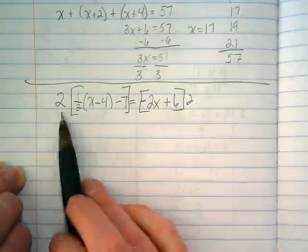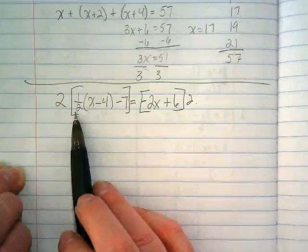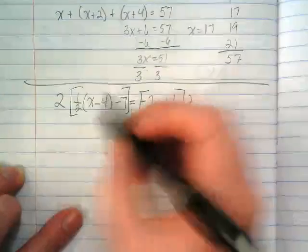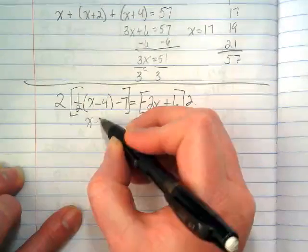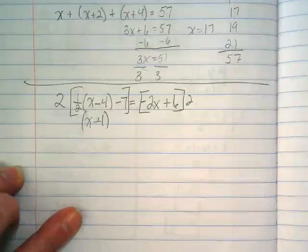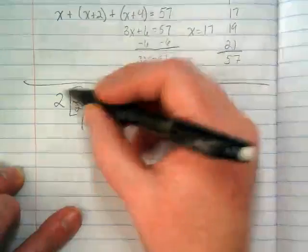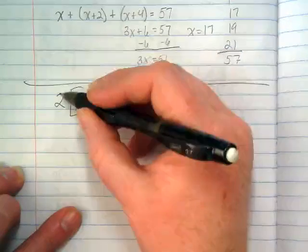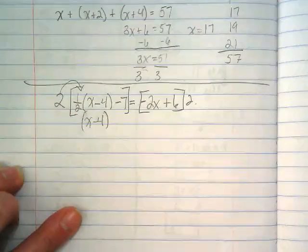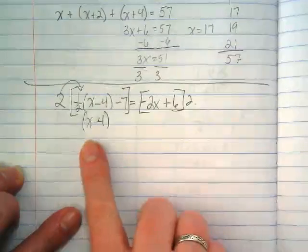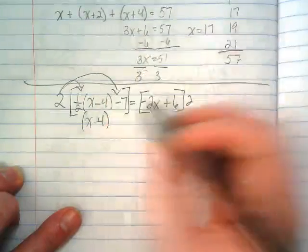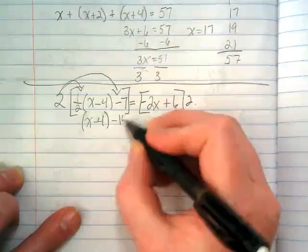That 2 over 1 times 1 over 2 is going to become an invisible 1. That means on the left side, this x minus 4, because it was connected to it, stays as it is. But we do have to distribute this to here. We've distributed it to here and it became a 1, and anything times 1 stays the same, which is why the x minus 4 just stays as it is. And then we're going to multiply this times the negative 7, which gives us negative 14.